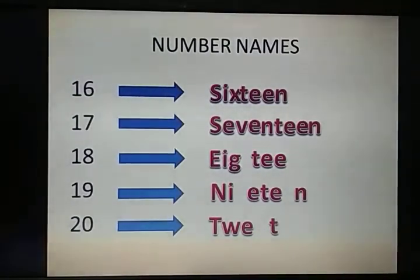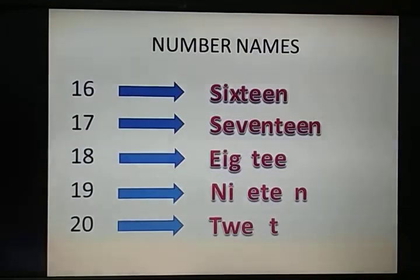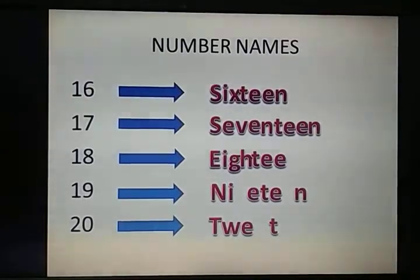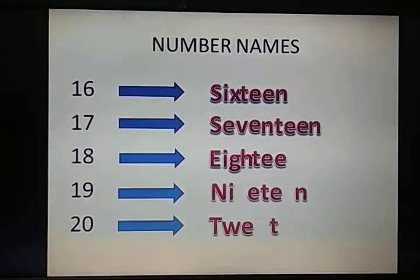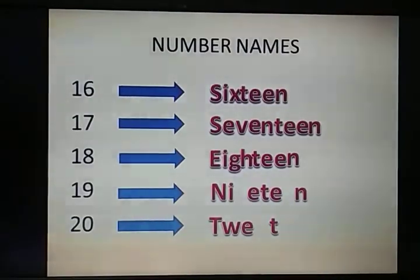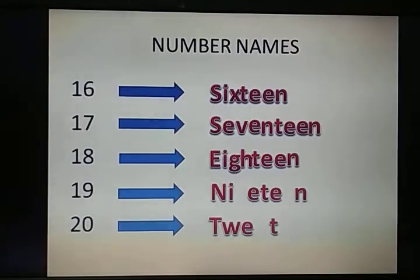And now 18 — E, I, G, H. H is missing. H, T, double E, N. Very good. E, I, G, H, T, double E, N. 18.